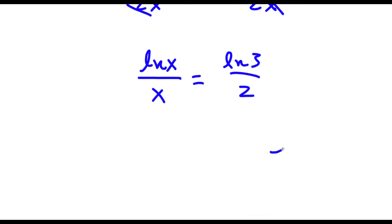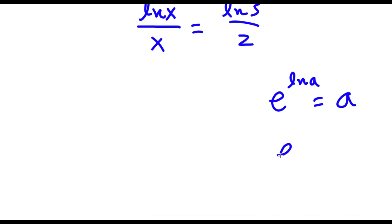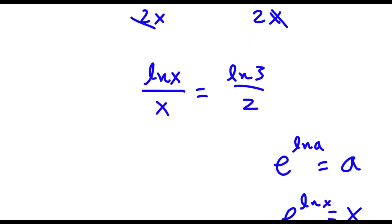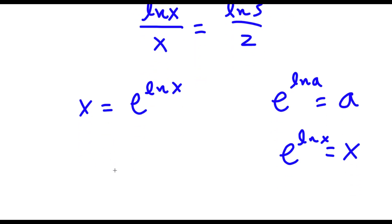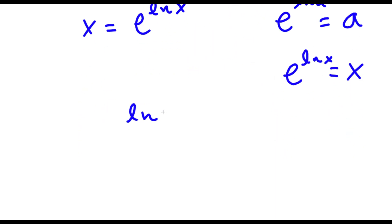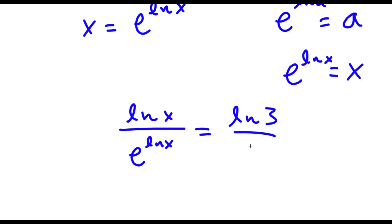Now, if I take e to the power of ln a, this is the same thing as simply a, because the e and the ln simply cancel out. Same with e to the power of ln x — this is the same thing as x. So x here, I'm going to replace with e to the power of ln x. So now I have ln x over e to the power of ln x is equal to ln 3 over 2.